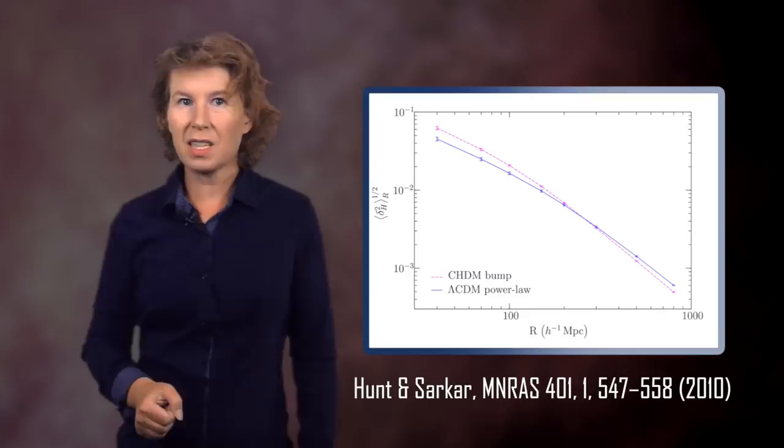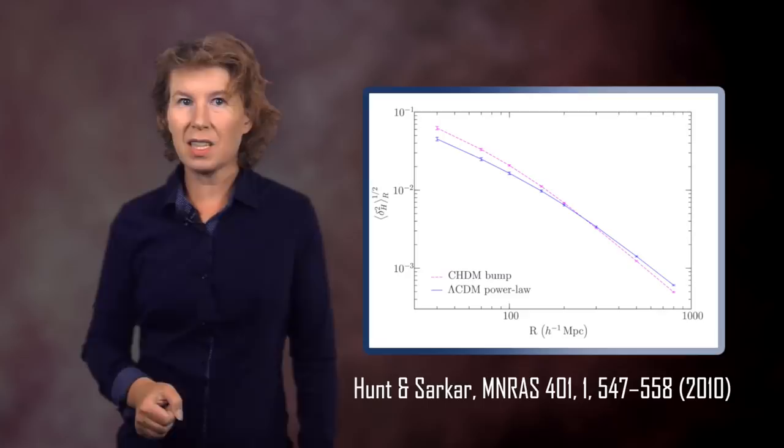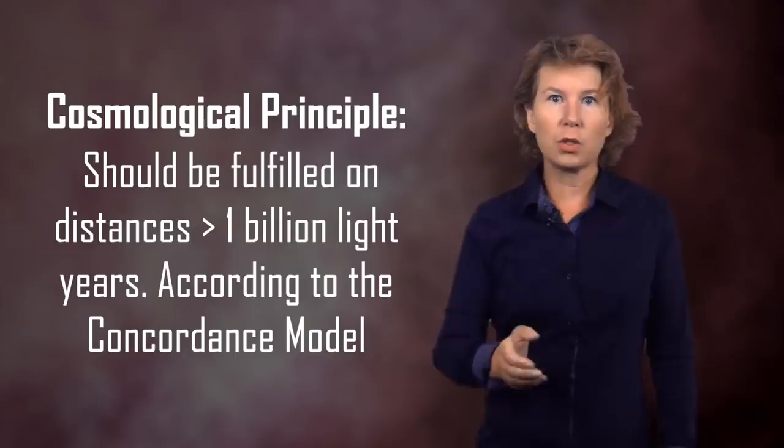Three hundred megaparsecs are about one billion light years. Just to give you a sense of scale, our distance to the next closest galaxy, Andromeda, is about two and a half million light years — so a billion light years is huge. But from that distance on, at the latest, the cosmological principle should be fulfilled to good accuracy, if the concordance model is correct.